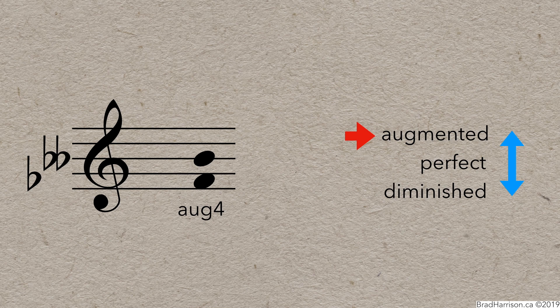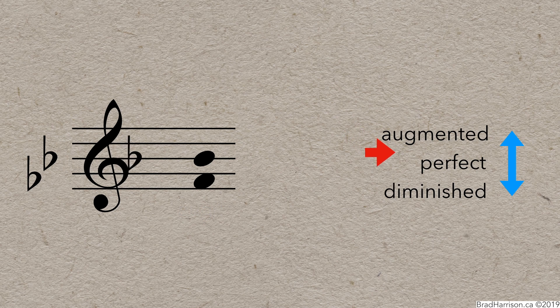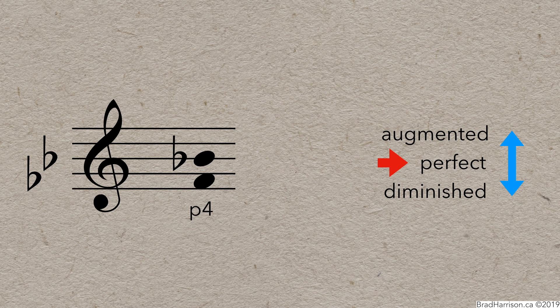Adding the first flat back to the B, the interval becomes a semitone smaller, and it's a perfect 4th. Then, the second flat makes it smaller again, and it's a diminished 4th.